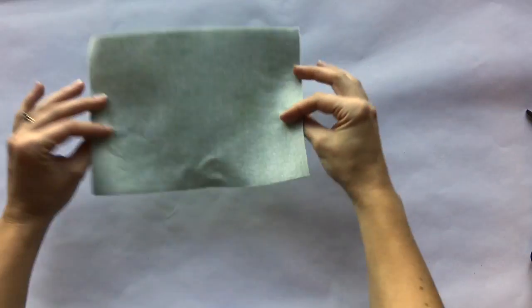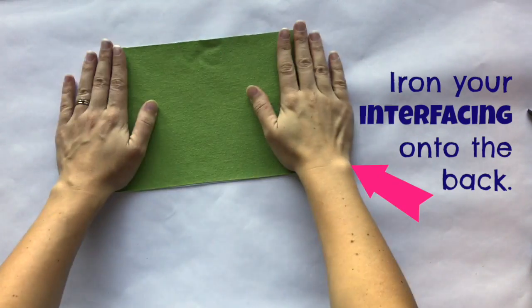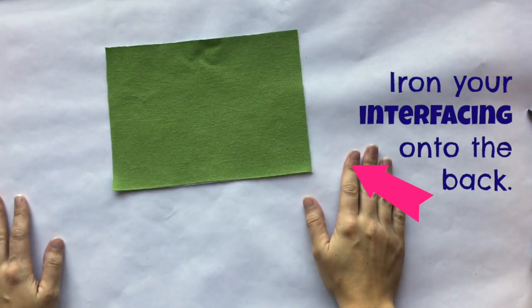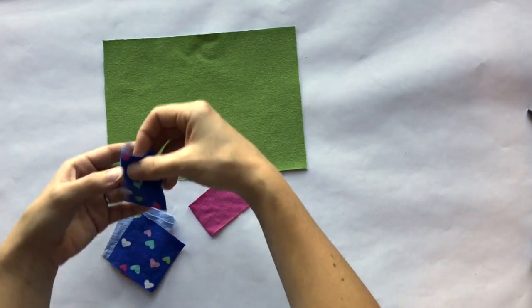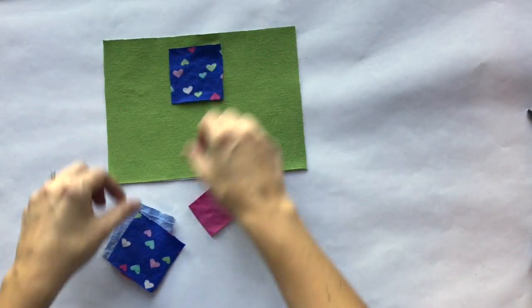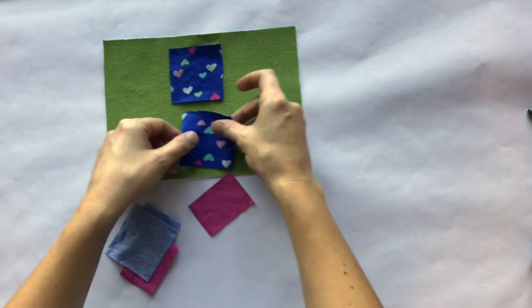I'm going to start by cutting your t-shirt fabric the size you want it for your project, whatever that may be. I'm making a basic zipper pouch. Then you want to cut squares of other t-shirts. Mine are two and a half inches.